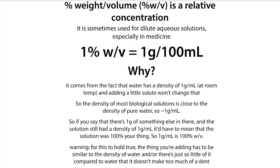So if we add molecules into a water solution very dilutely, or if we're adding something similar to the density of water, we're not going to be changing the density. The density of pure water is about a gram per milliliter, or 100 grams per 100 milliliters. So now let's say we take 100 milliliters, but instead of having it all be water, we have a gram of something else dissolved in there — maybe one gram of salt.